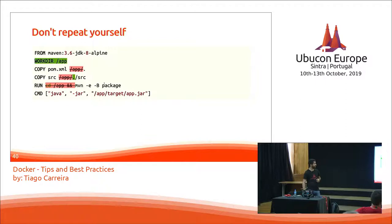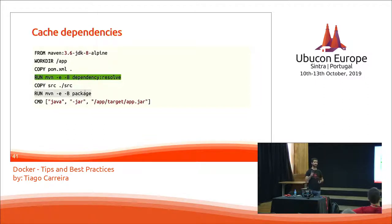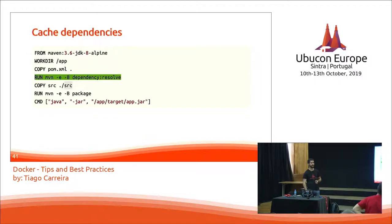We can improve things further. We can use WORKDIR to set the working directory inside the container. We can also force dependencies to be cached — if we run the Maven dependency downloader as a separate command before copying source files, it will cache those dependencies. Then if I change a source file, it just rebuilds the compilation step without having to download 700 megabytes of dependencies again.